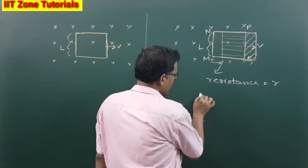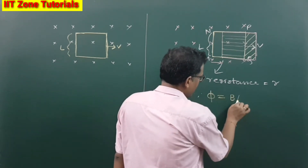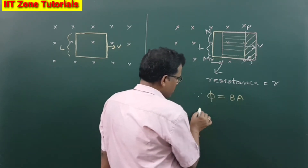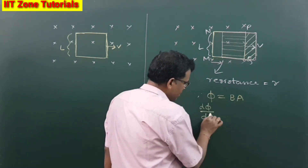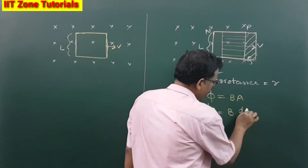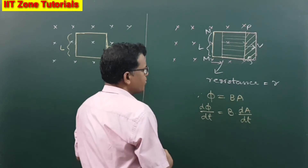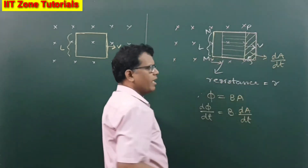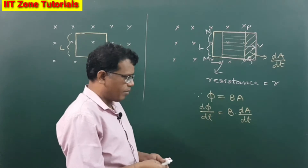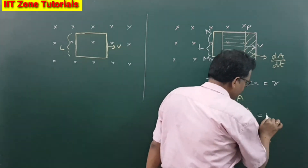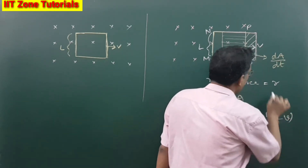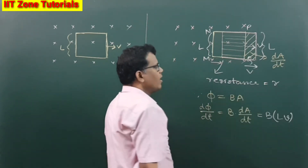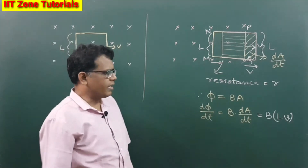Since the flux linked with the area can be written as B into A — as the area vector and magnetic field vector are parallel — dΦ/dt is equal to B into dA/dt. This rate of change of area dA/dt can be written as B into L into V, where L is the length of the side of the square loop and V is the speed at which it is coming out per second. So the induced EMF equals BLV.